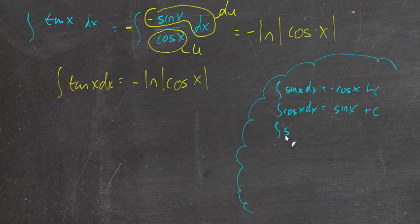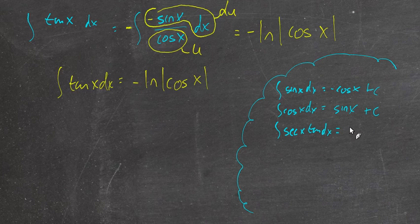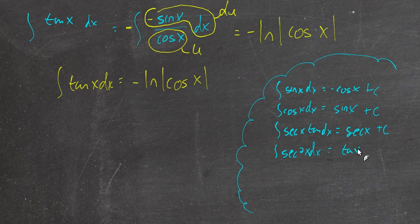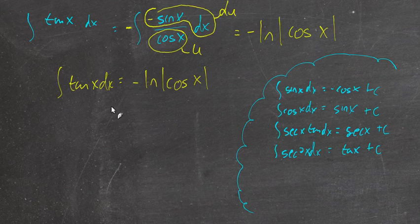If you look back in your memory, you'll recall that we knew the anti-derivative of sine of x dx was equal to negative cosine x, and the anti-derivative of cosine x dx was sine x plus c. But to go beyond that, we didn't have the anti-derivative of tangent. We had the anti-derivative of secant tangent, because earlier we learned that the derivative of secant was secant tangent. We also had secant squared, since secant squared is the derivative of tangent, so the anti-derivative of secant squared is tangent.